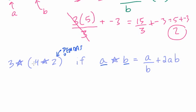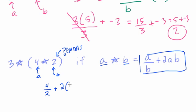PEMDAS starts with parentheses. So in other words, we solve 4 star 2 first, where 4 is a and 2 is b and that will give us a number. That number will then be our new b and 3 will be our new a. Let me show you what I mean. So here, we take a over b. That's what our formula tells us to do. So 4 over 2, 4 is a, 2 is b. And then we add 2 times 4 times 2. So here, 4 over 2 is just 2. 2 times 4 is 8, doubled is 16. So we have 2 plus 16, which is 18.